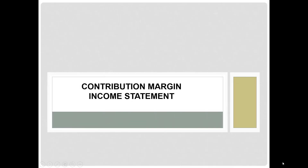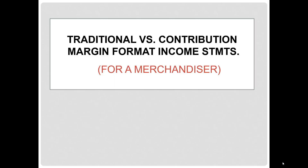Now that you have an understanding of the different ways to classify costs, it's a good time to introduce what we call the Contribution Margin Income Statement. We'll do this by comparing it to the traditional income statement that you learned how to prepare in your first accounting course. We will focus on the merchandiser here at the beginning of this coverage and then later in the course we'll adapt it to the manufacturing situation.